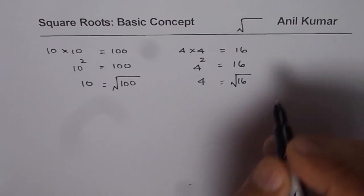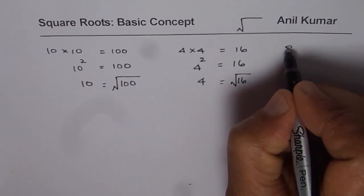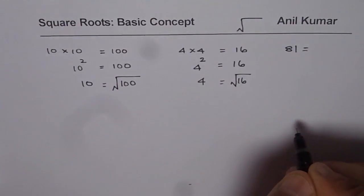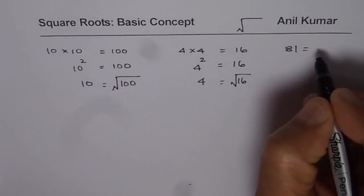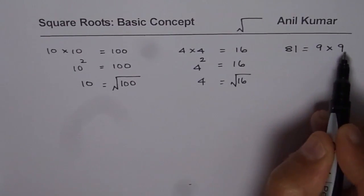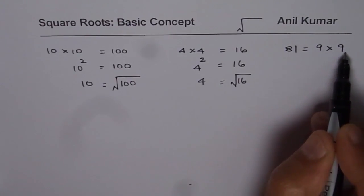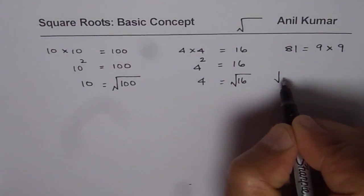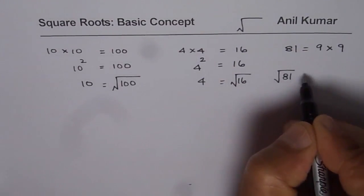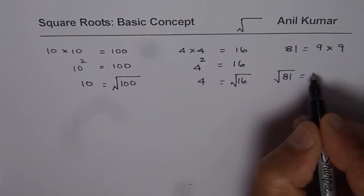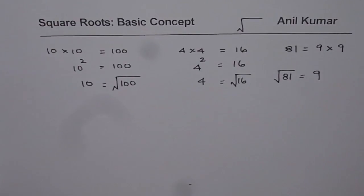So let me write it in the reverse way. Let me take example as 81. Now 81 has many factors. We can write 81 as 9 times 9. Now 9 times 9 means two same factors. In that case, we could say that square root of 81 is one of the two equal factors, which is 9.